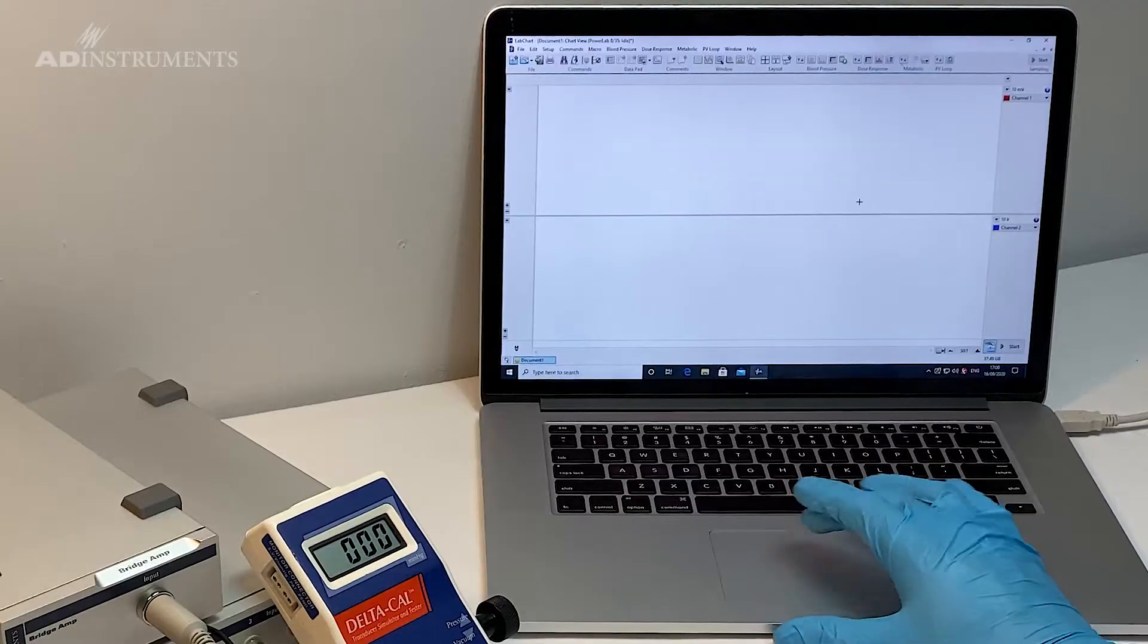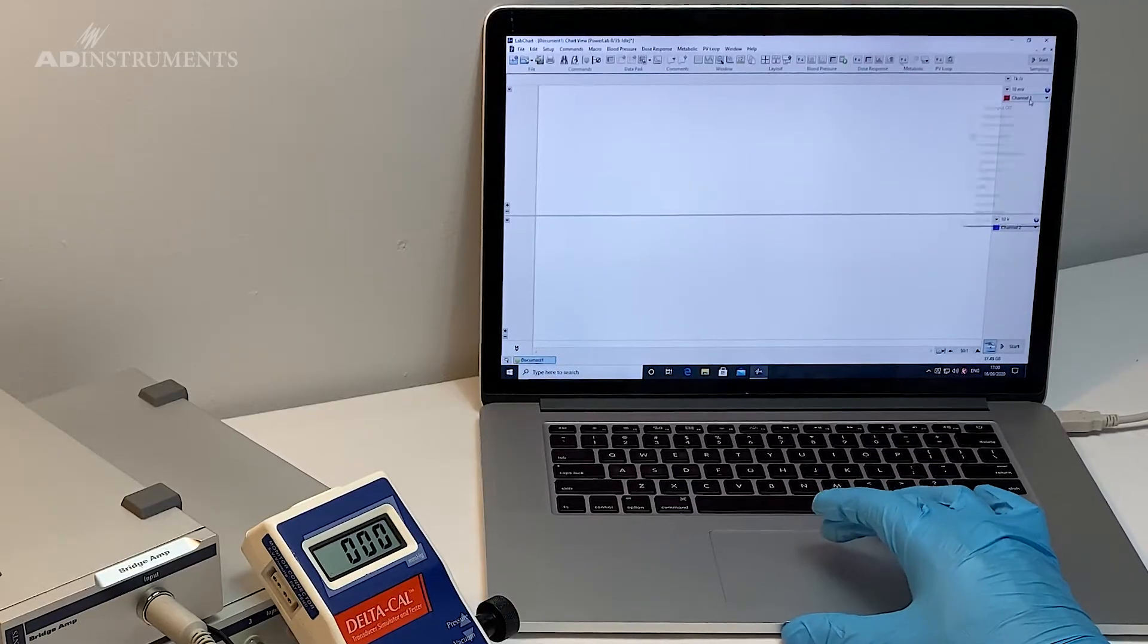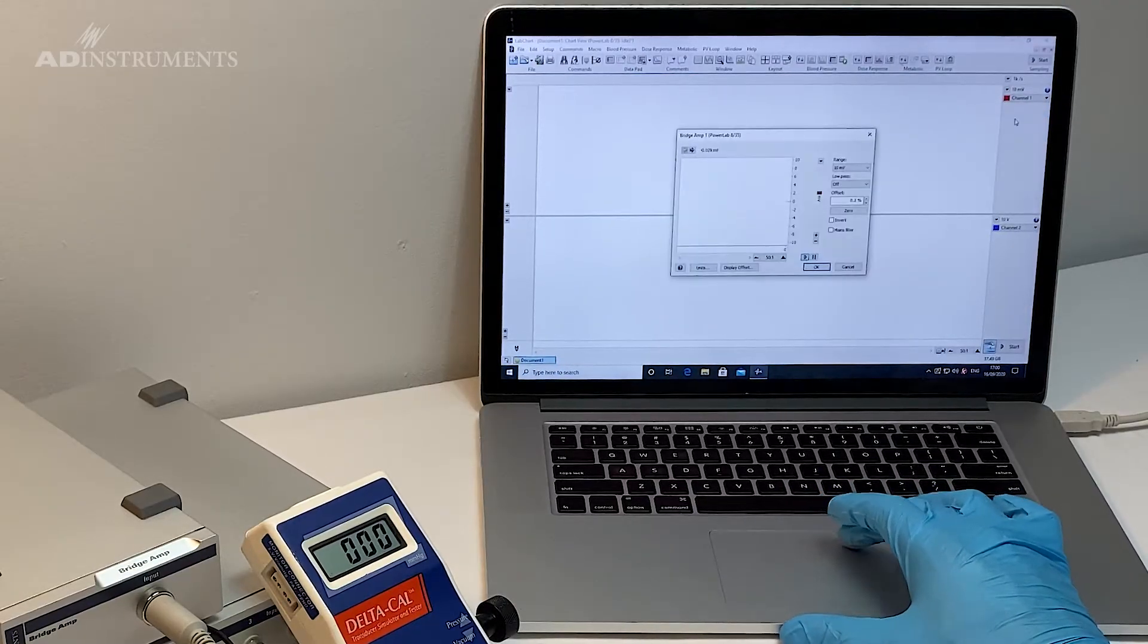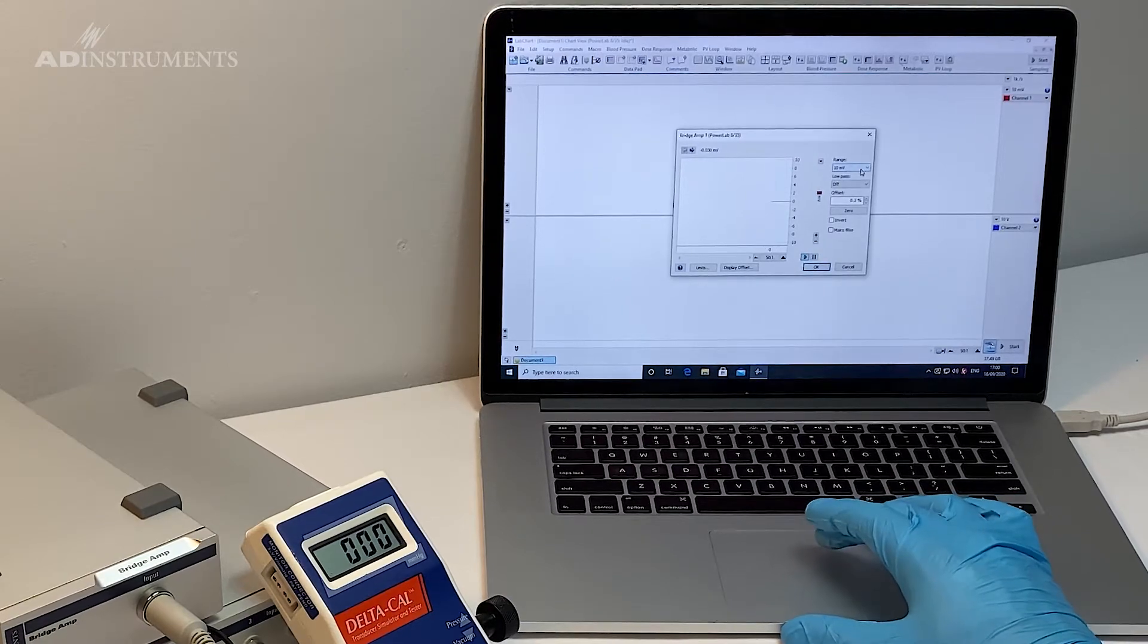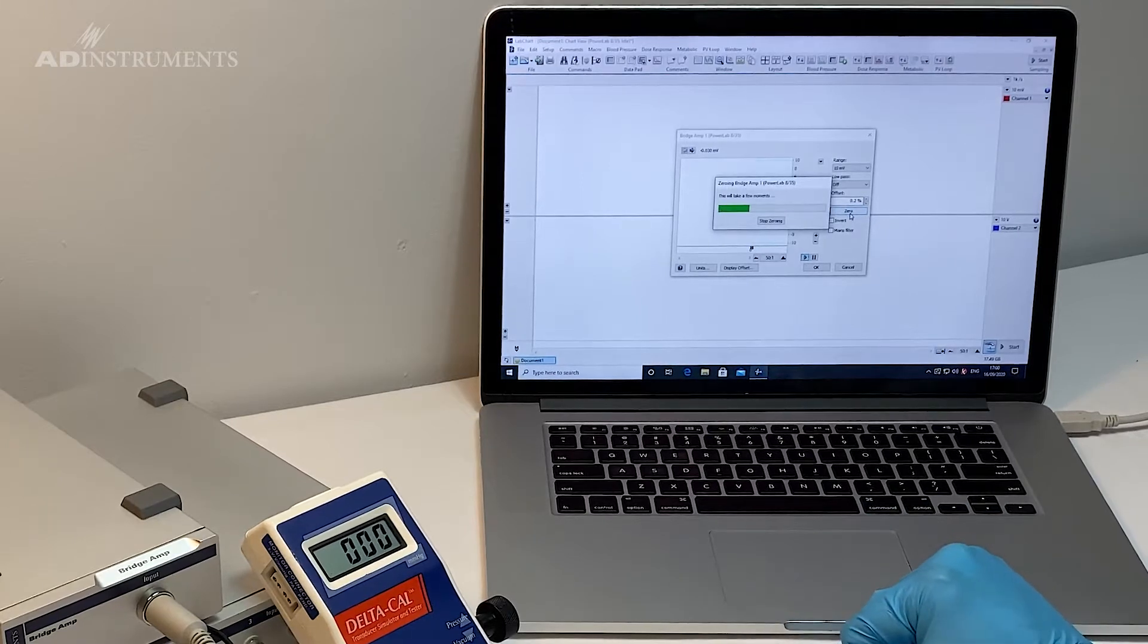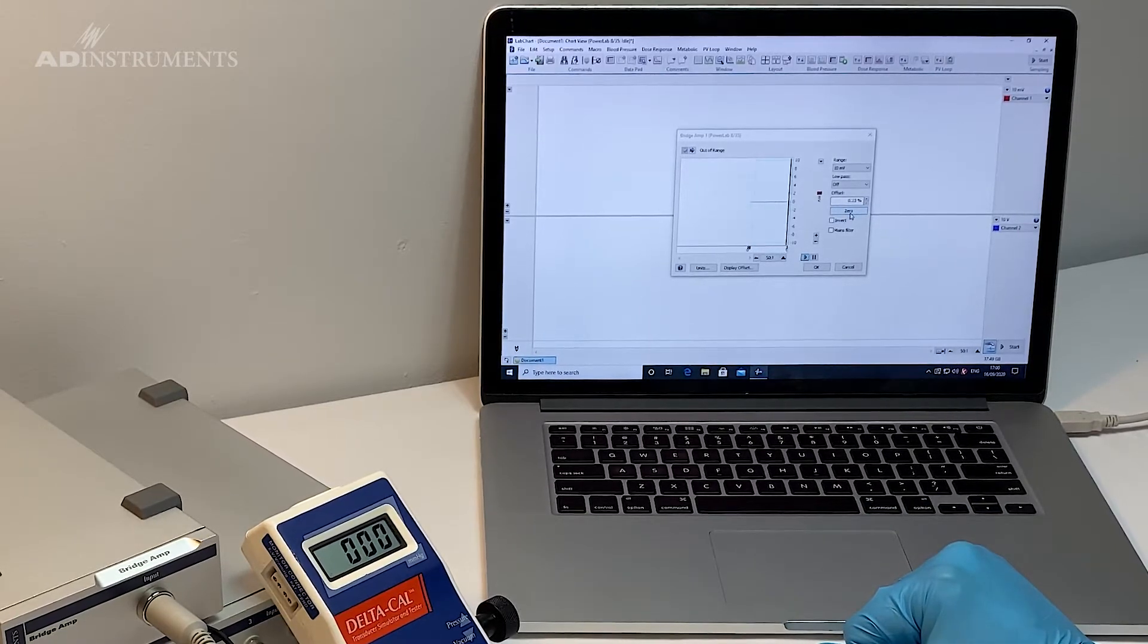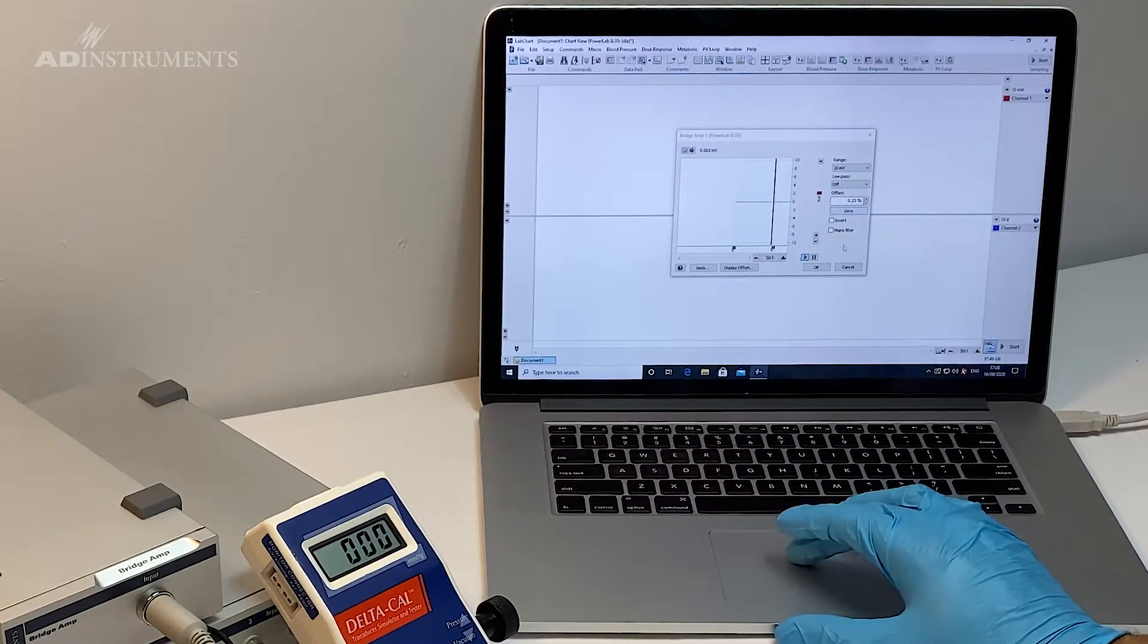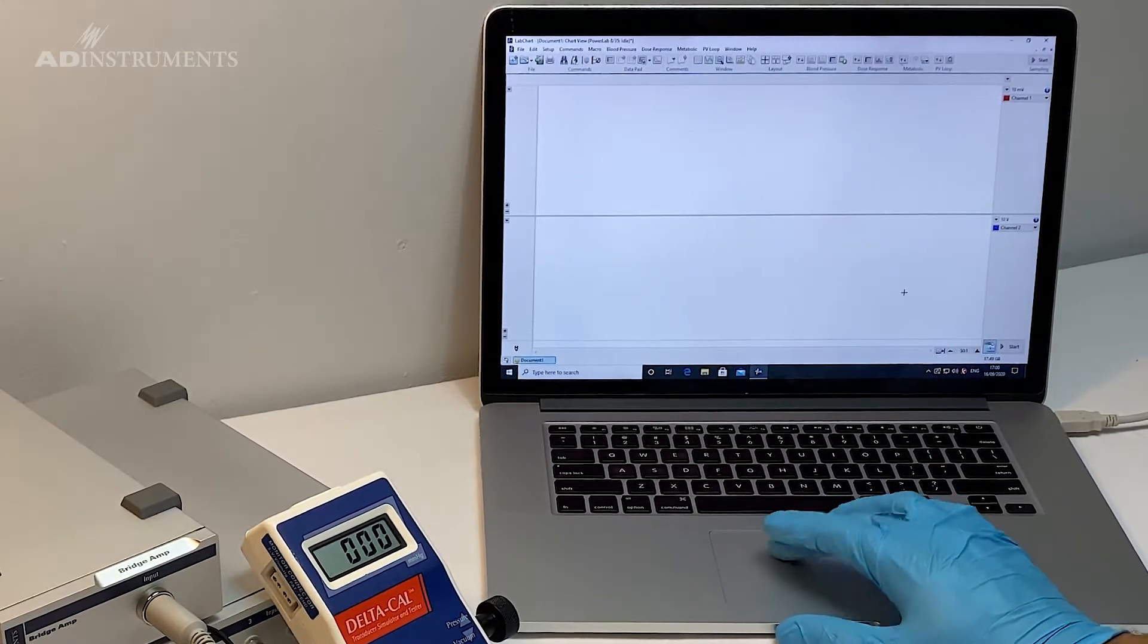I'll go to the bridge amp. My range is on 10 millivolts and I can now zero this transducer. It takes a couple of seconds.